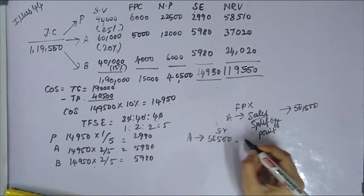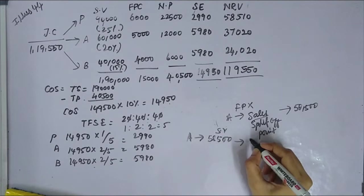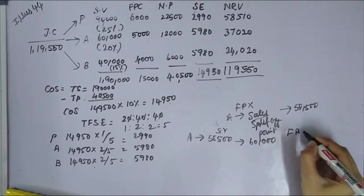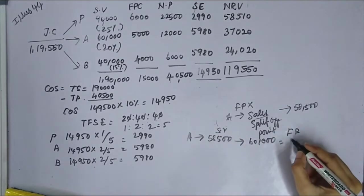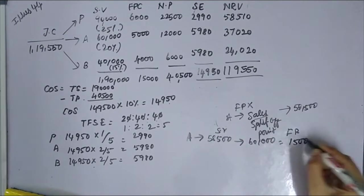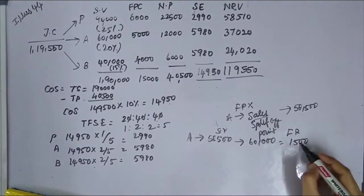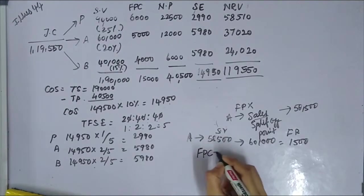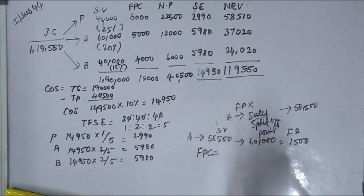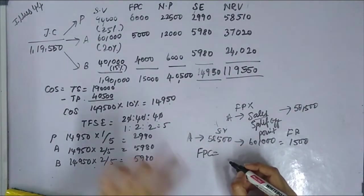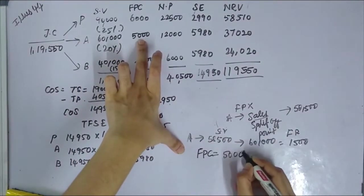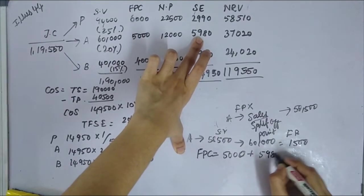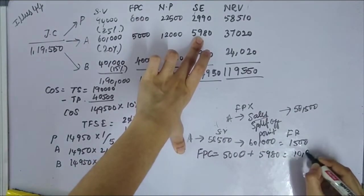To answer this: if sold after further processing, revenue from by-product A is 60,000, but the incremental cost is further process cost 5,000 plus fixed selling expenses 5,980 = total cost of 10,980.